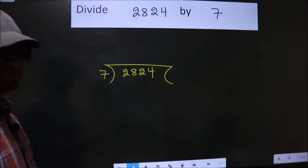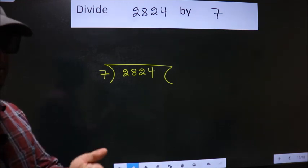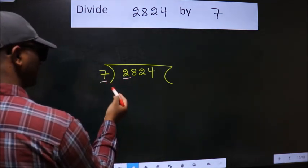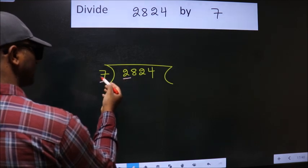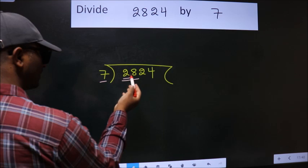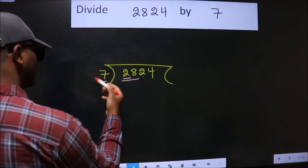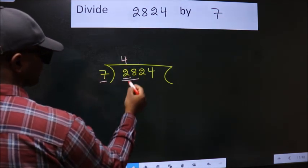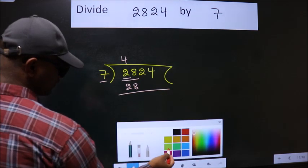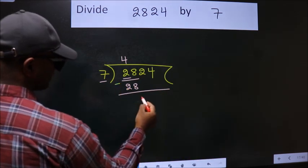This is your step one. Next, here we have 2. 7 into 2 is smaller than 7, so we should take two numbers: 28. When do we get 28 in the 7 table? 7 fours are 28. Now we should subtract, we get 0.